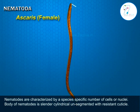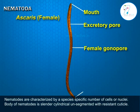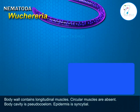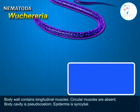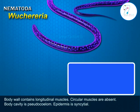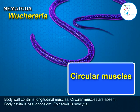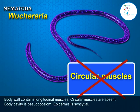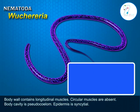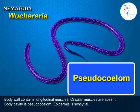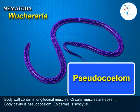The body of nematodes is slender and cylindrical, unsegmented, with a resistant cuticle. The body wall contains longitudinal muscles; circular muscles are absent. The body cavity is a pseudocoelom.